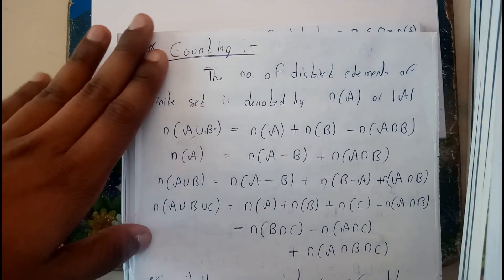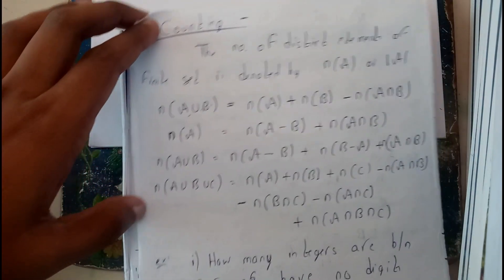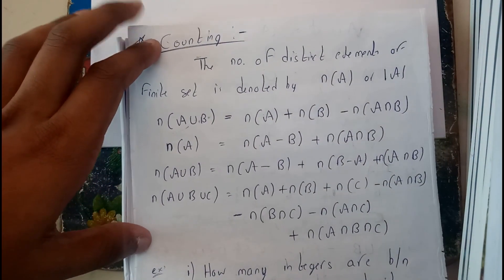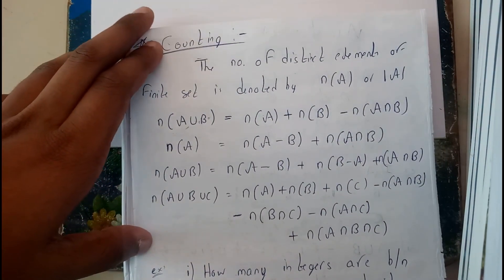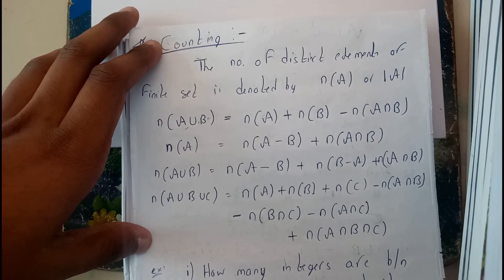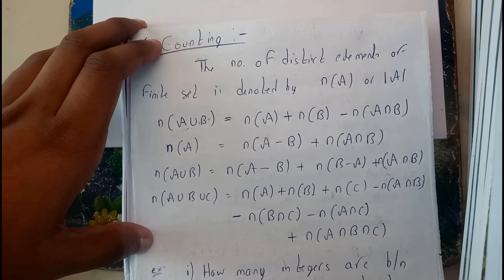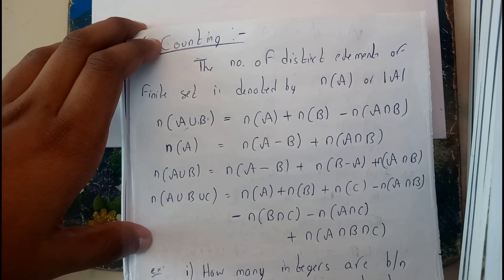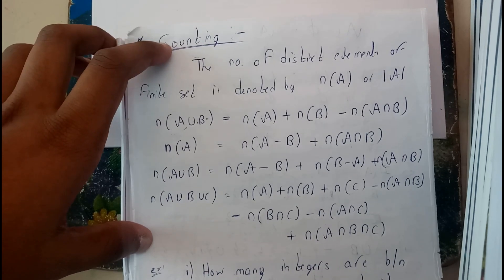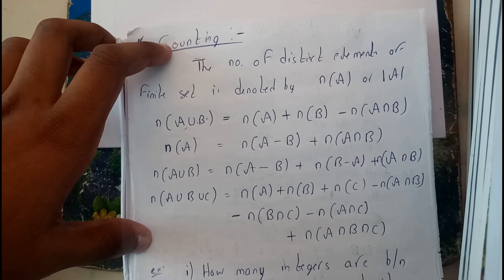N(A union B) equals N(A) plus N(B) minus N(A intersection B). Similarly, N(A union B union C) equals N(A) plus N(B) plus N(C), minus N(A intersection B) minus N(B intersection C) minus N(A intersection C), plus N(A intersection B intersection C).